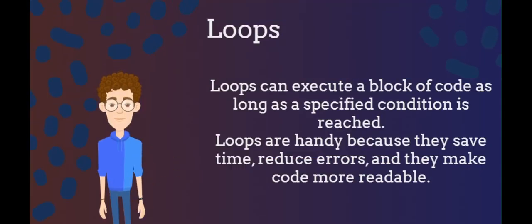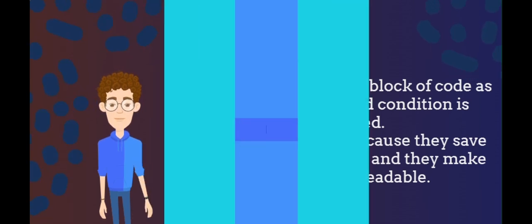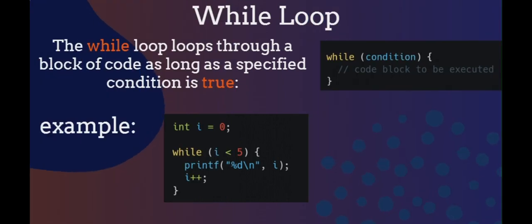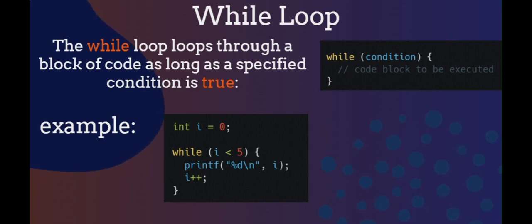Now let's talk about loops. Loops can execute a block of code as long as a specified condition is reached. Loops are handy because they save time, reduce errors, and they make code more readable. While loop: the while loop loops through a block of code as long as a specified condition is true. In the example below, the code in the loop will run over and over again as long as variable i is less than 5. Do not forget to increase the variable used in the condition (i++), otherwise the loop will never end.